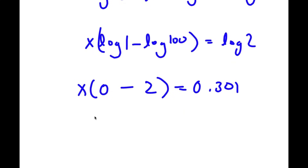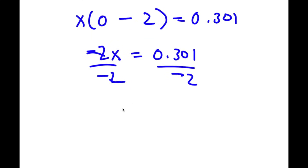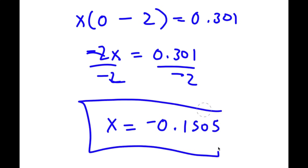Now, 0 minus 2 is negative 2. So I have negative 2 times x is equal to 0.301. I'm going to divide both sides by negative 2. These two cancel out, and I'm left with x is equal to 0.301 over negative 2, which is equal to negative 0.1505. So this is my answer.